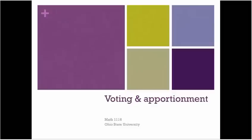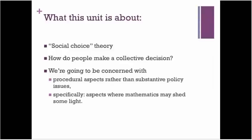This is a very brief introduction to the unit that we're beginning now, which is called Voting and Apportionment. In this unit, we're going to study three topics. It's all under the general heading of what is sometimes called social choice theory. And the basic question there is: how do people make a decision together? How do they make a collective decision?